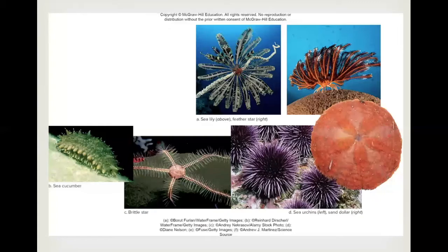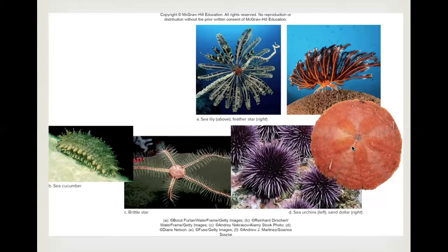Here are some examples of echinoderm diversity. We have a sea lily, which is immobile, and a feather star, which is motile and clings to coral or sponges where it feeds on plankton. There is also the sea cucumber, which has a long leathery body with feeding tentacles around the mouth. The brittle star has a central disc from which long flexible arms radiate. Sea urchins and sand dollars have spines used for locomotion, defense, and burrowing.